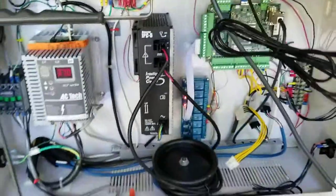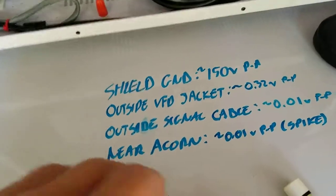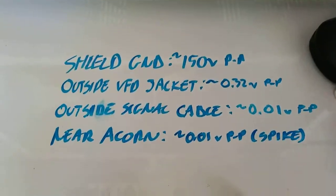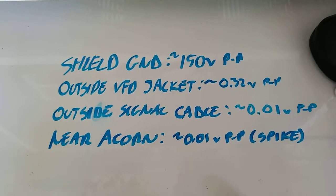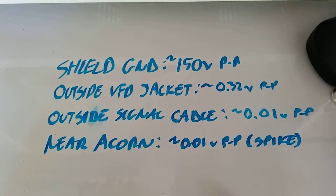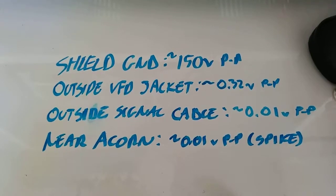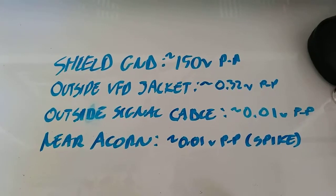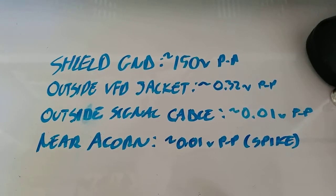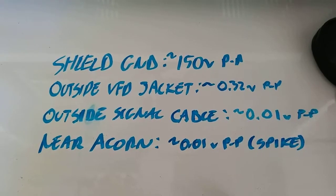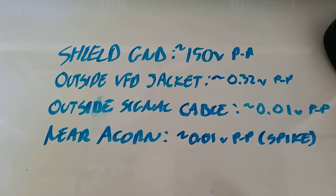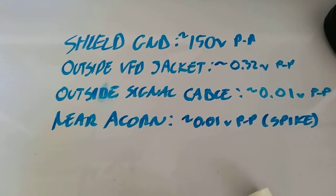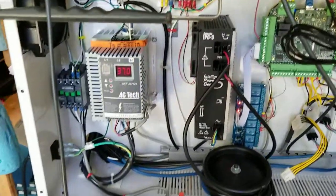So in the video, I just wanted to show what the effects are. I recorded this beforehand from some independent measurements. Again, the shield ground measuring a whopping 150 volts peak-to-peak. Outside the VFD jacket, 0.32. Near the signal cables, 0.01. And near the Acorn, 0.01, but just for that really short duration spike.